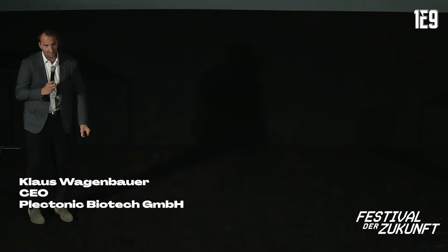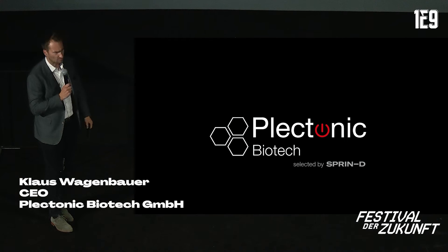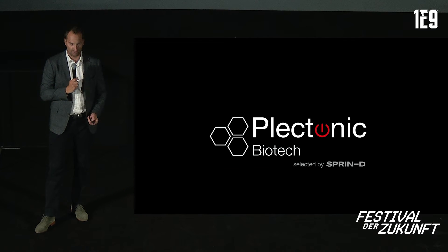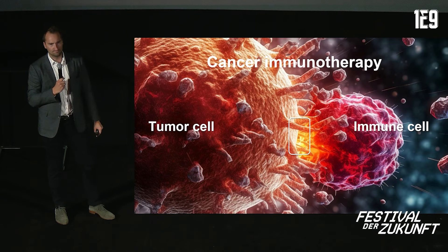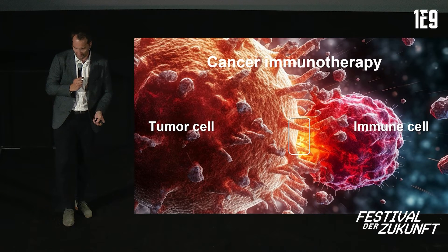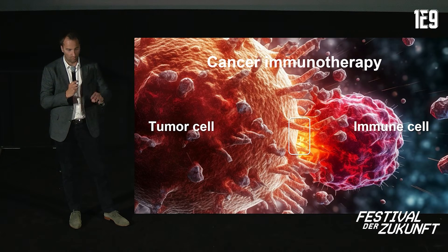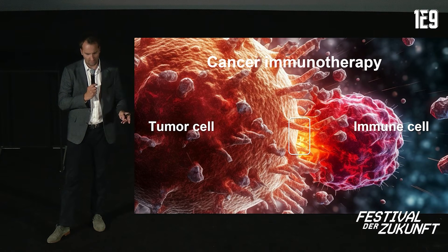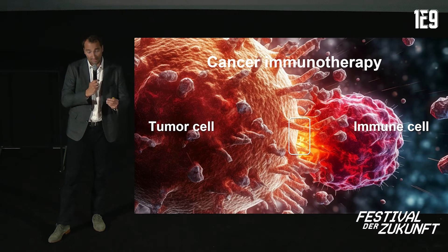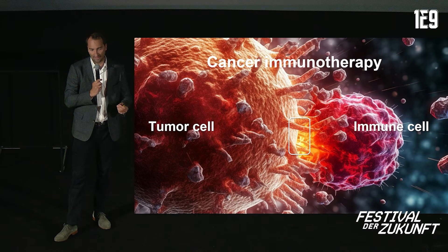We at Plektonik aim to revolutionize the way we treat cancer. We work in the field of cancer immunotherapy — using the body's own immune system to combat cancerous cells in a very targeted manner. You can see an immune cell actually attacking a tumor cell via one of its surface markers. By doing so, the cells interact with one another and form an interface, through which the immune cell poisons the tumor cell. We at Plektonik want to make this process even more efficient and safer at the same time.